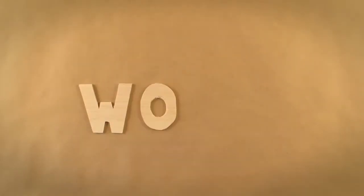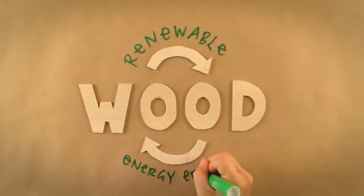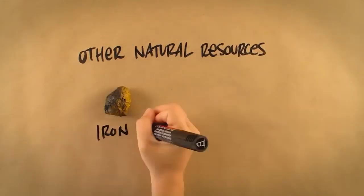Wood is one type of material that can do just that. Today, we're going to look at wood as a renewable and energy efficient resource and compare it to a number of other types of natural resources such as iron and copper.